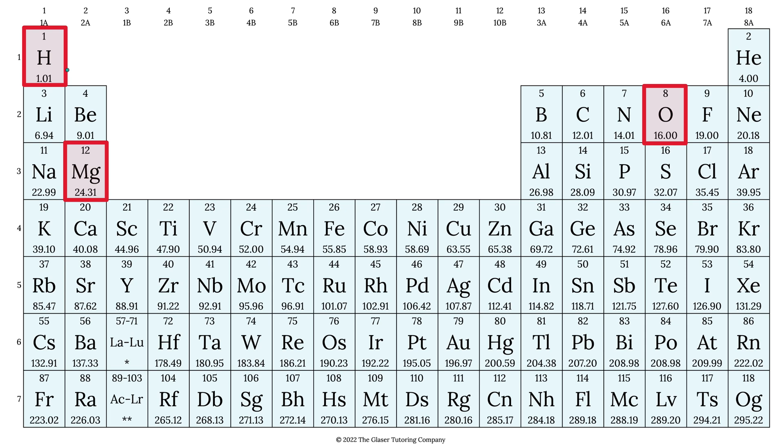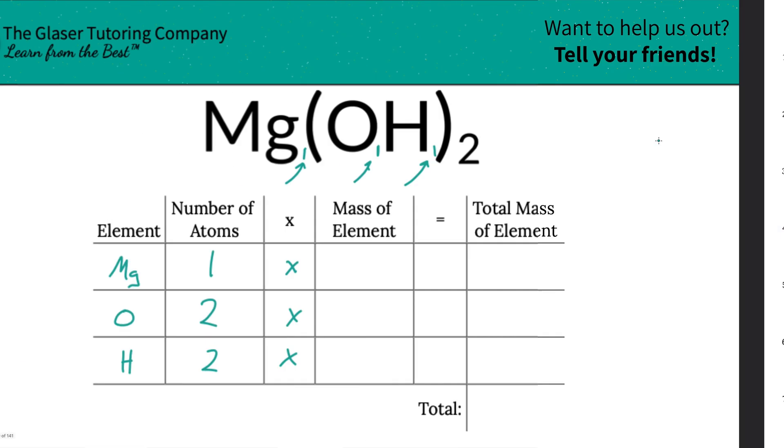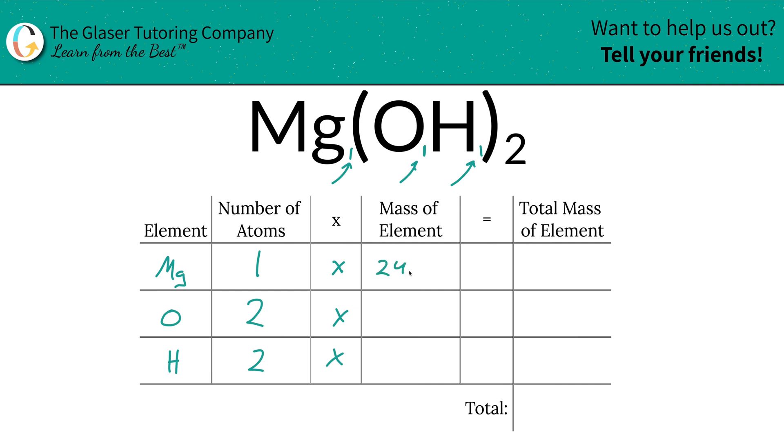That's where the periodic table comes into play. So magnesium's mass is 24.31, hydrogen is 1.01, and oxygen is going to be 16. So let's write them in: we get 24.31 for magnesium, oxygen was 16, and hydrogen was 1.01.